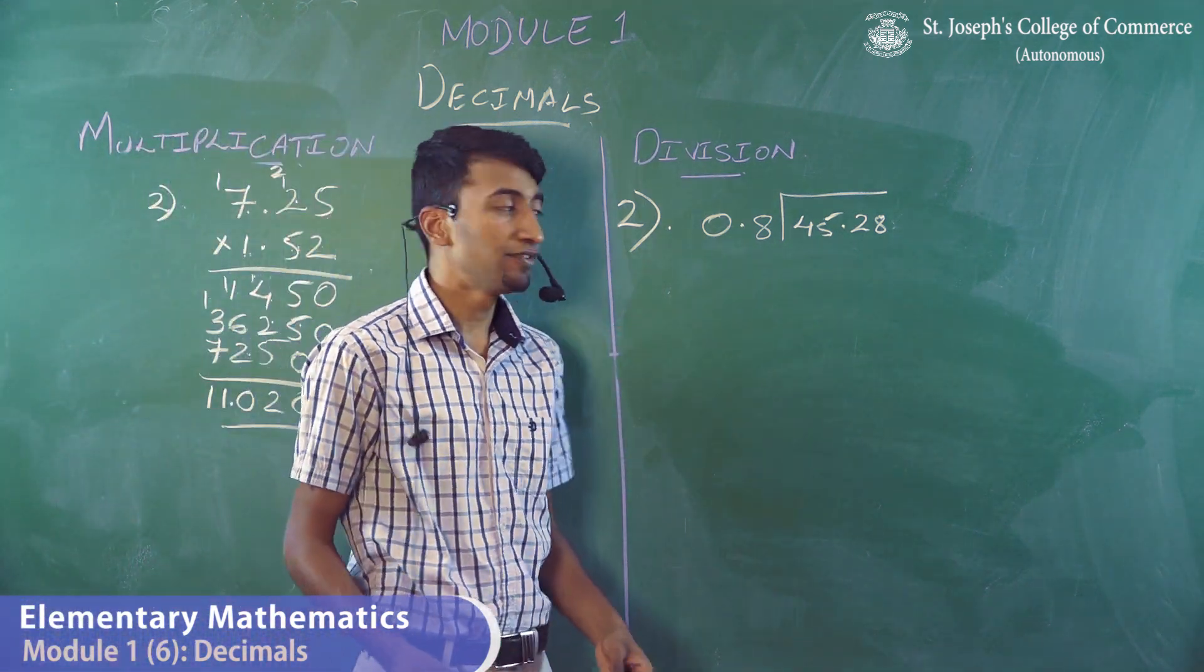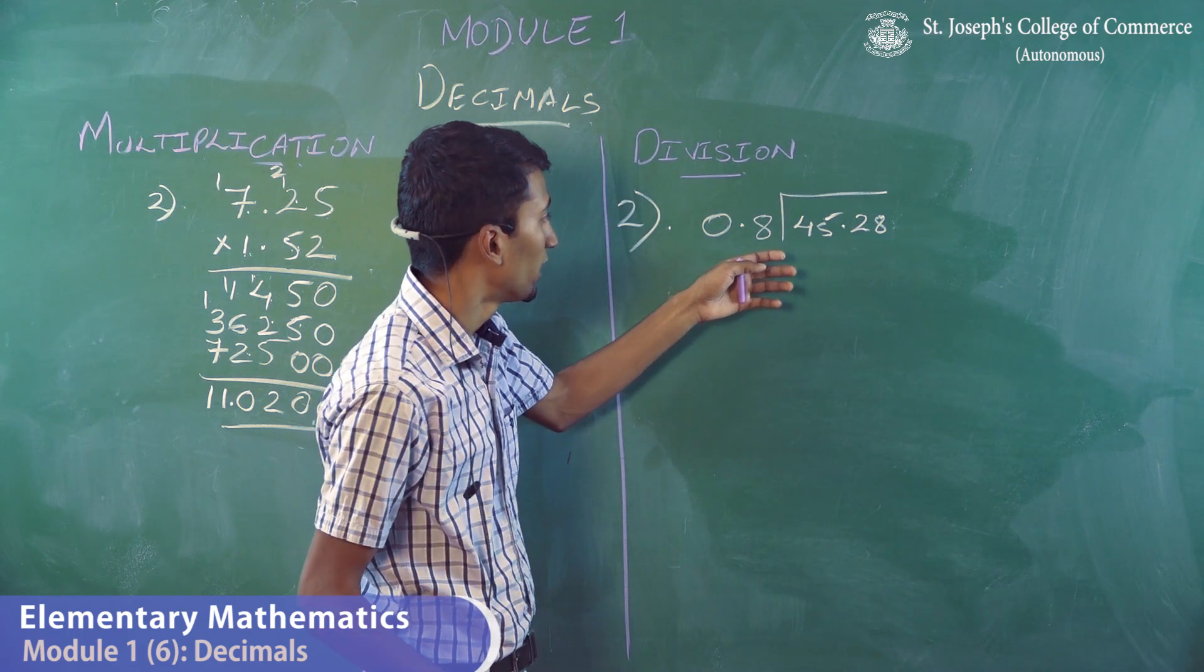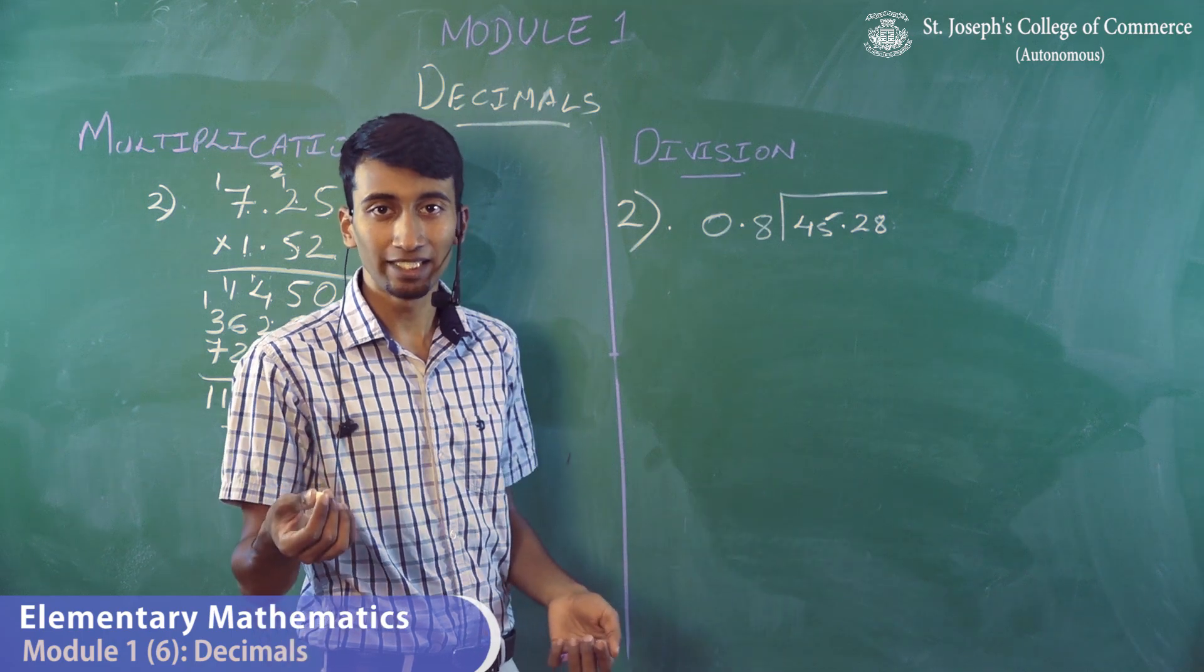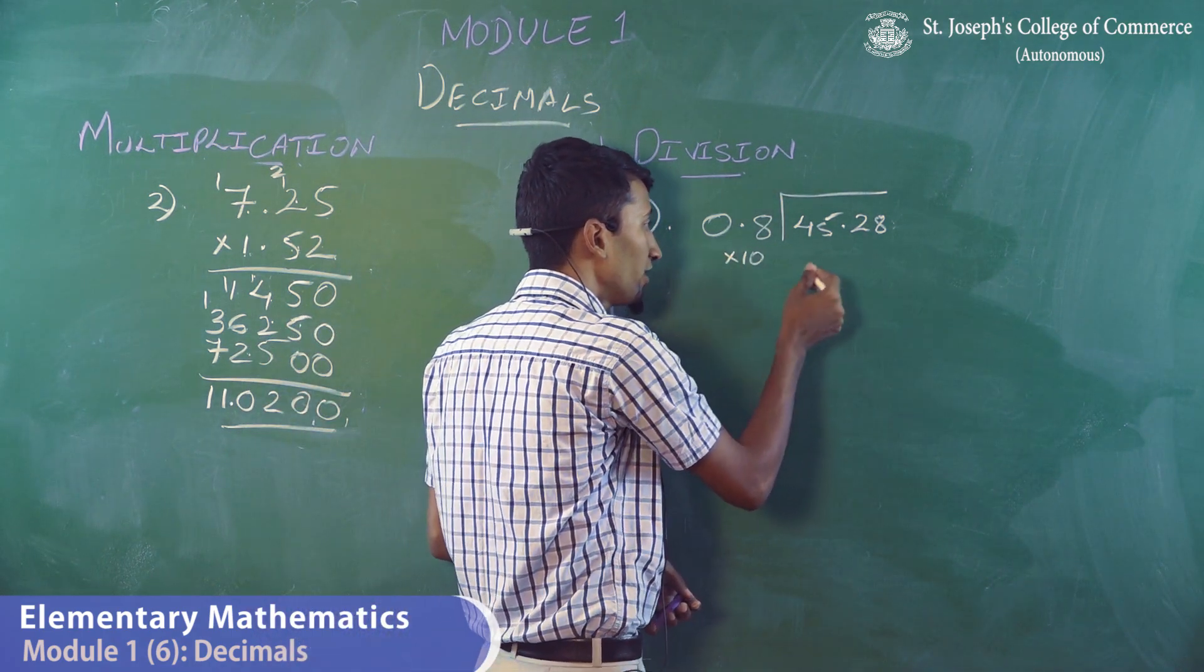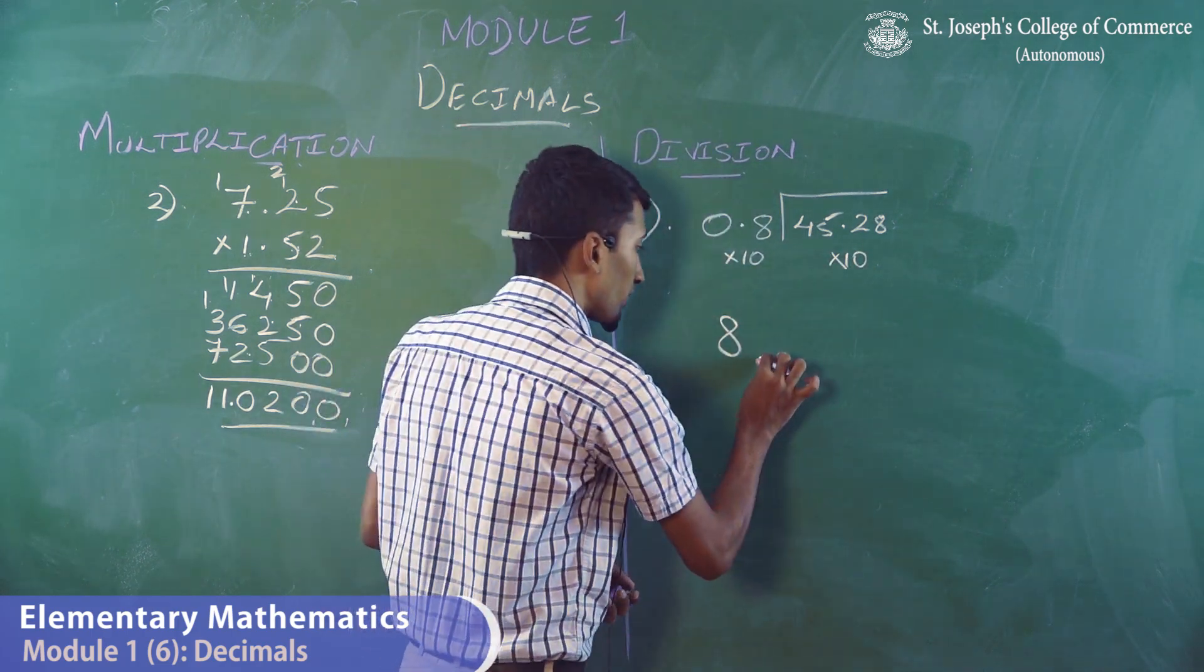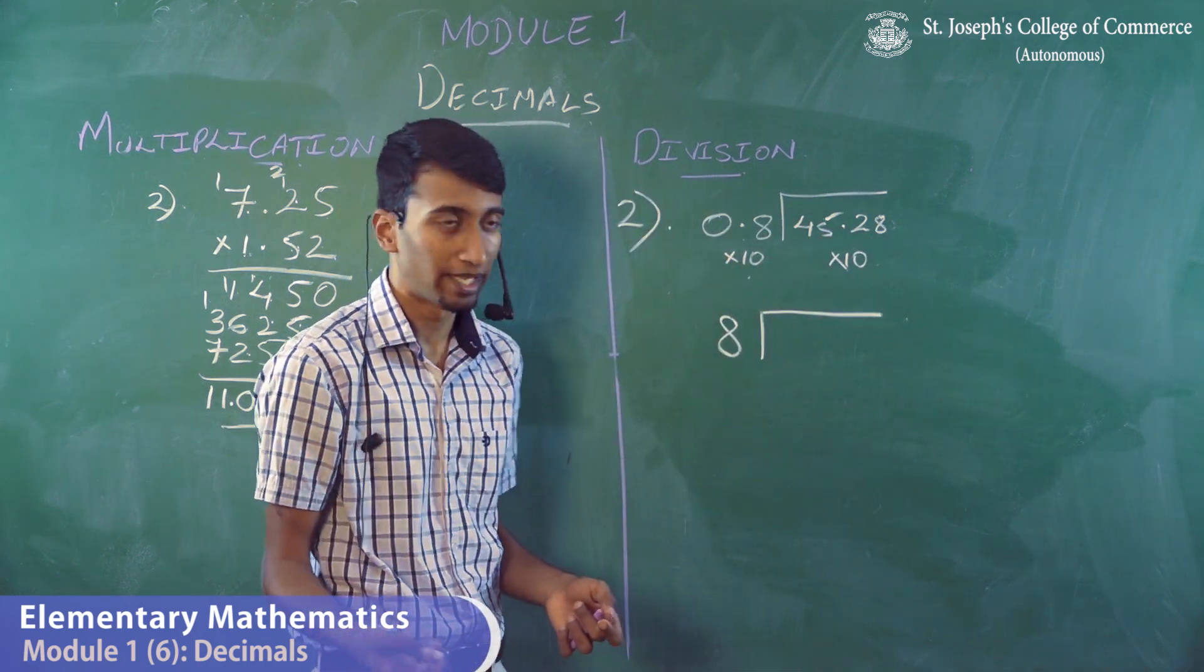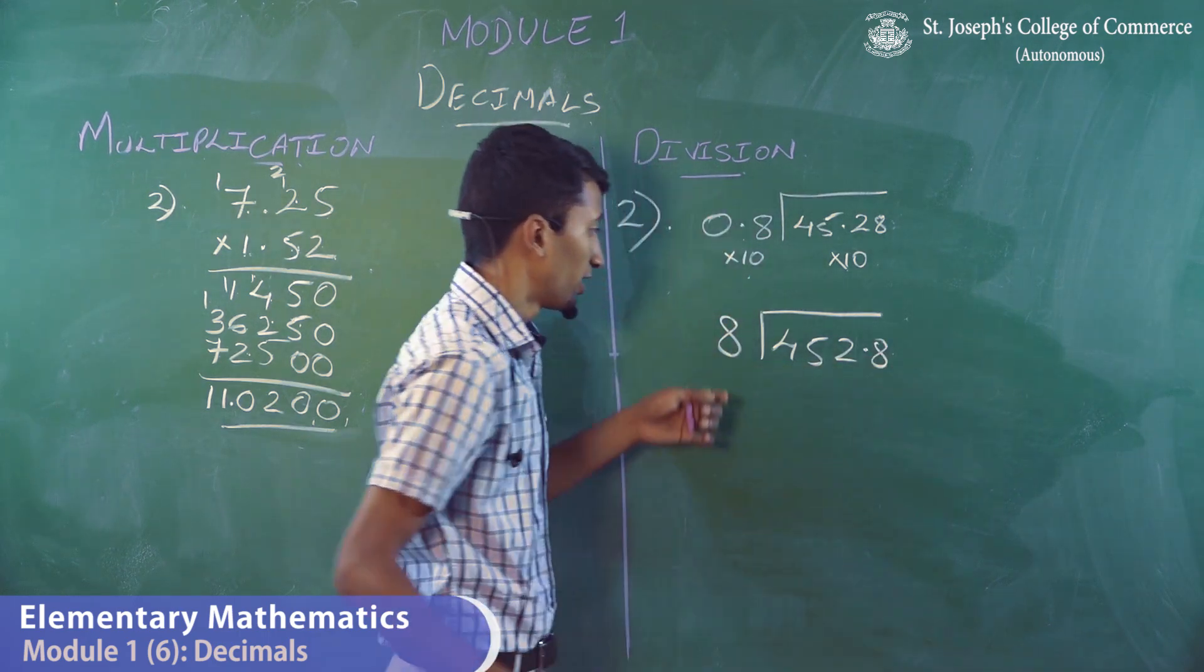Now, moving into division. Over here, it's 45.28 divided by 0.8. It's going to be a little tedious to solve this sum. So, I just multiply this by 10 to make 0.8 to 8, which makes it much more easier. And since I'm multiplying 0.8 by 10, I have to multiply this also by 10. That would be 452.8.